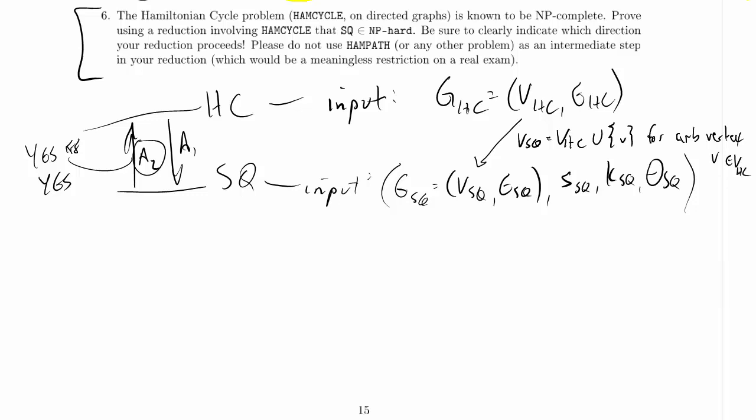So we're going to pick a vertex. And I'm actually going to set this statement aside because I'm going to use it again. S_SQ is going to be equal to V. It's going to be that arbitrary vertex. Oh, I should say V prime, right? What I'm doing is I'm adding a copy of the starting vertex.